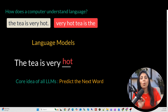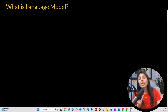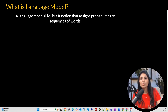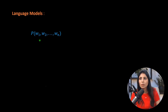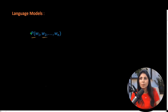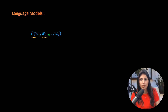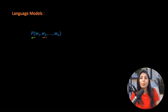So what exactly is a language model? A language model is a function that assigns a probability to a sequence of words or tokens. Mathematically, we write it as P(w1, w2, ..., wn), which simply means the probability that these words appear in this sequence in natural language.